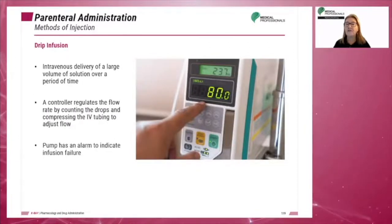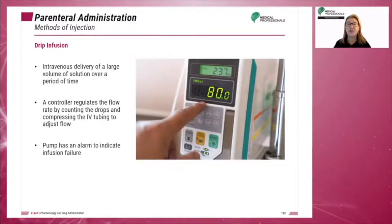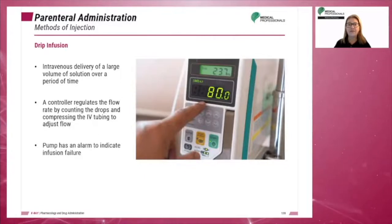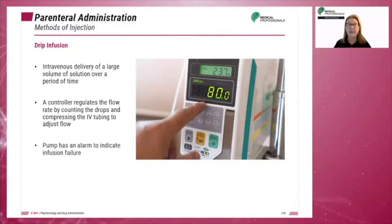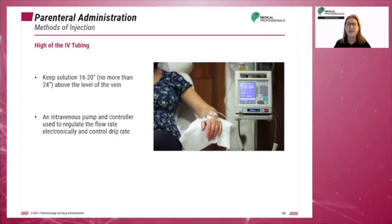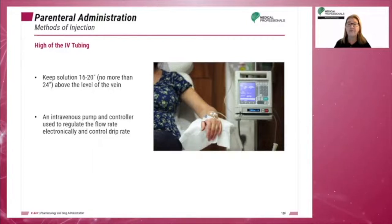Drip infusion involves slowly dripping or infusing the medication into the patient. This method is used to deliver a large volume of solution intravenously over a period of time. The equipment needed is an intravenous pole and an infusion set. In the infusion set, a controller regulates the flow rate by counting the drops and compressing the IV tube to adjust flow. The pump has an alarm to indicate infusion failure. The medication in a drip infusion set should be kept no more than 24 inches above the level of the vein.